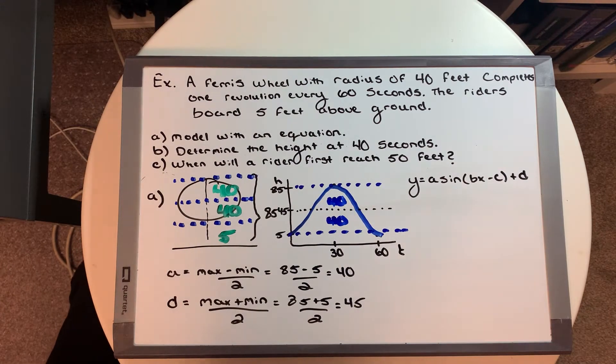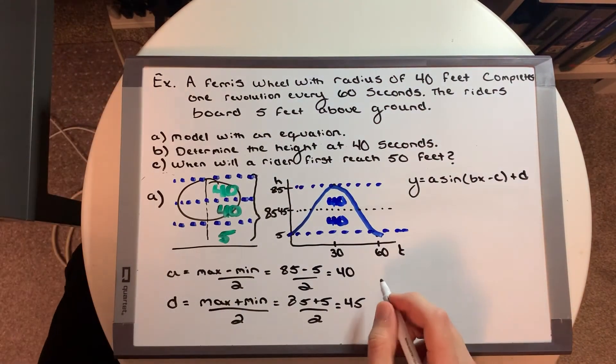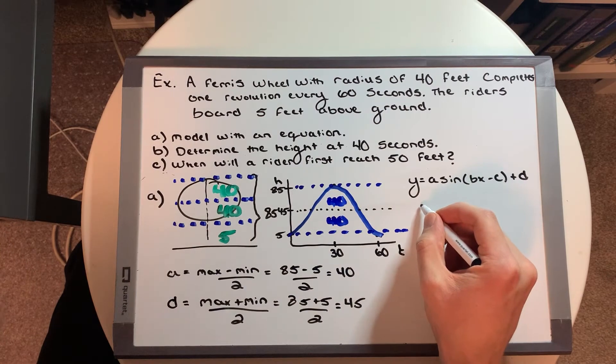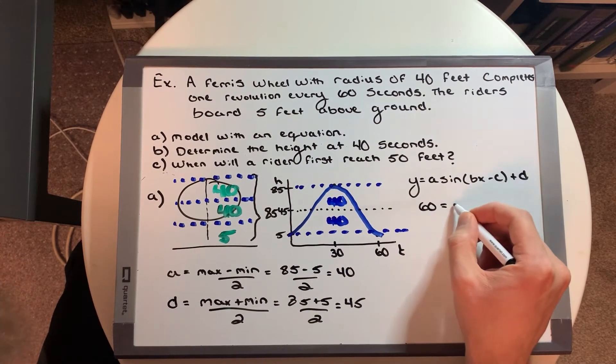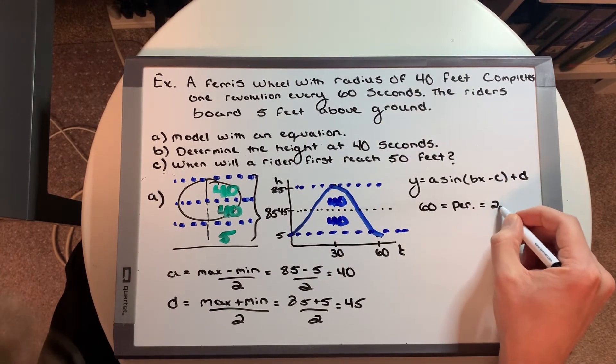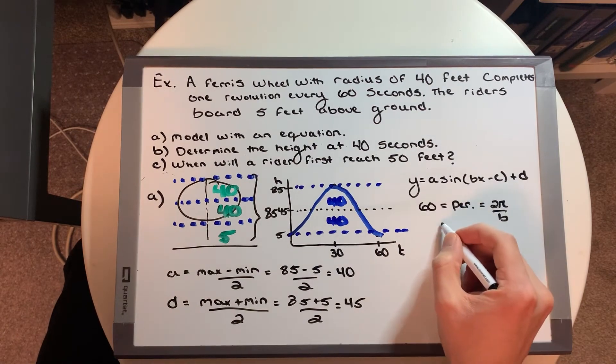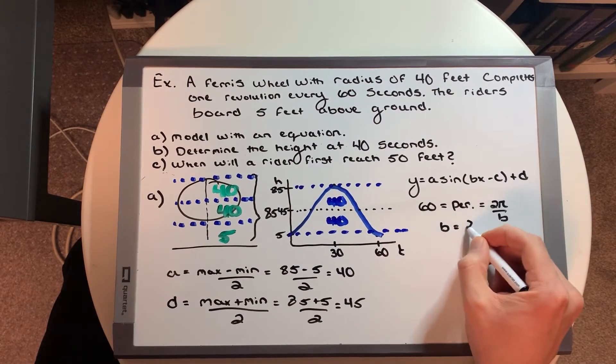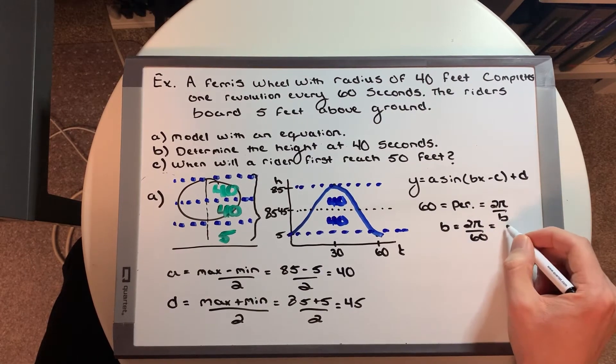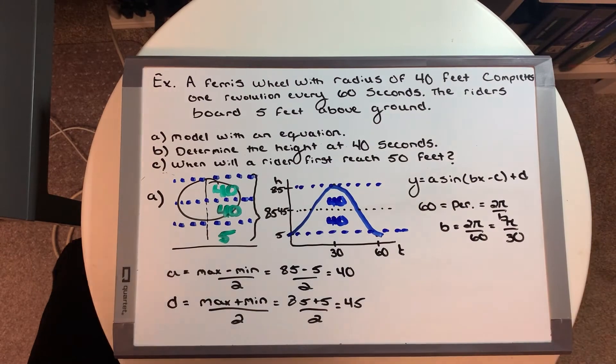Well, we need our B value, which corresponds with our period. So we say that our period or one complete revolution was 60. So we can say that 60, which is equal to our period, I'll just write it as PR, is equal to two pi over B. Thus, by rearranging, we say that B is equal to two pi over 60, which is also equal to pi over 30. Okay.